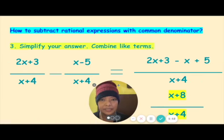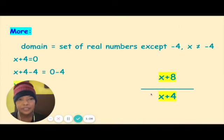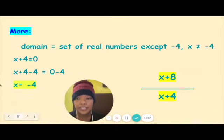Magiging ganyan po siya. You perform your operation. 2x minus x is x. 3 plus 5 is 8, over x plus 4. This is your final answer. What is the domain of this expression? You just equate your denominator to 0 and your answer will become negative 4. The domain are set of real numbers except negative 4.